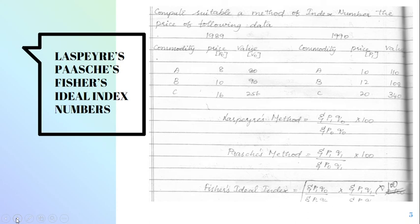The Fisher's method says that it is an ideal index number, a combination of the Laspier's and the Paasche's index number. That is root of sigma P1Q0 by sigma P0Q0 into sigma P1Q1 by sigma P0Q1 into 100.